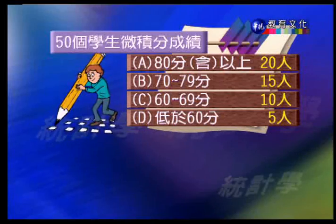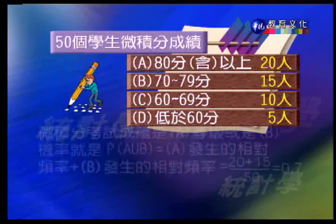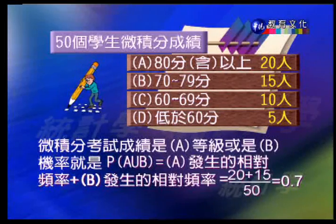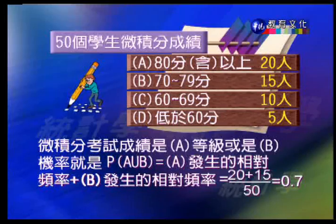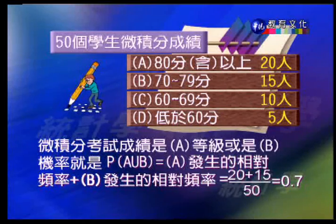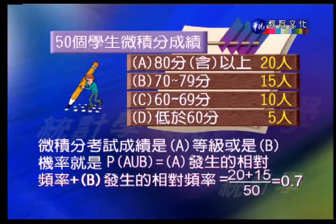如果問隨便抽一個學生，他的考試成績是A或B等級的機率是多高？把A等級人數加B等級人數再除以總人數，得到比率 0.7，這個0.7就代表機率。這種把數值分派給事件的方法，就是相對頻率的機率分配原則。